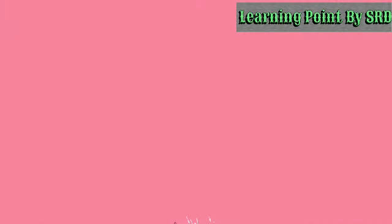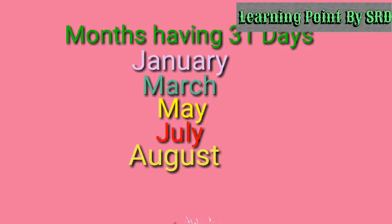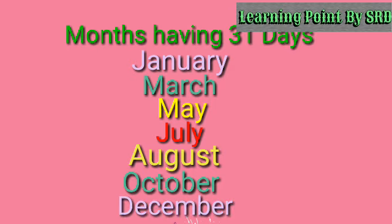The months of January, March, May, July, August, October and December have 31 days.